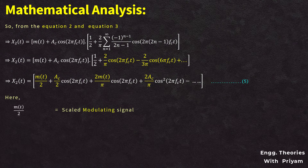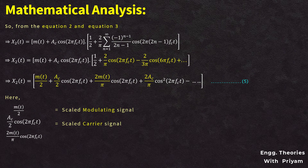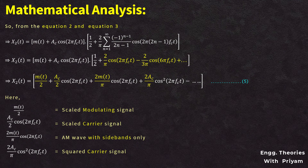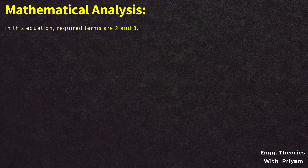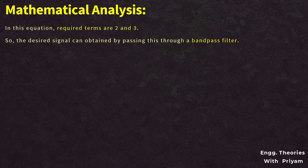In equation 5: m(t)/2 is the scaled modulating signal, (Ac/2)·cos(2π·fc·t) is the scaled carrier signal, (2/π)·m(t)·cos(2π·fc·t) is the amplitude modulated signal with sidebands, and (2Ac/π)·cos²(2π·fc·t) is the squared carrier term. The required terms are the second and third terms, so the desired signal is obtained by passing the output through a bandpass filter.